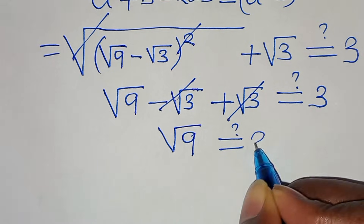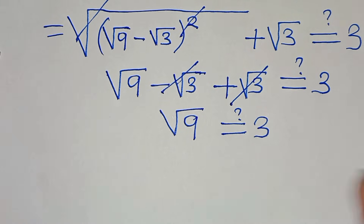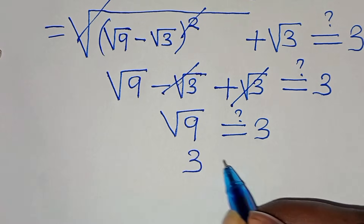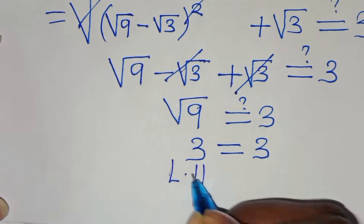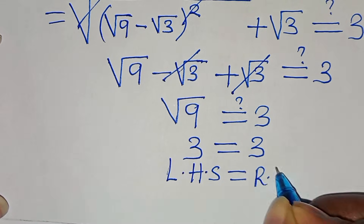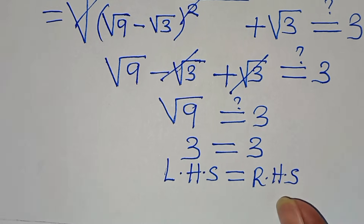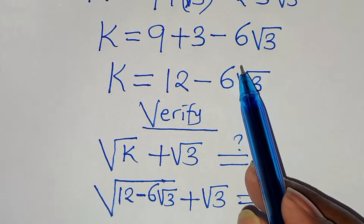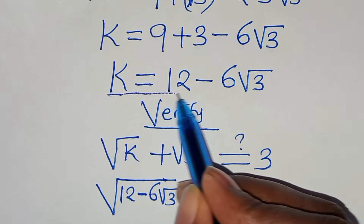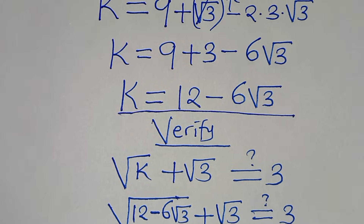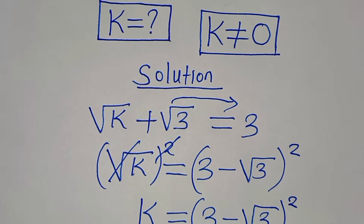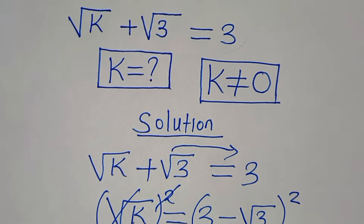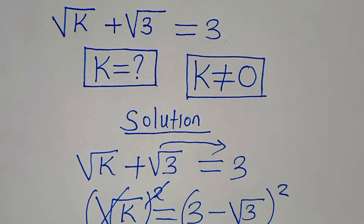Square root of 9 equals 3, so the left hand side equals the right hand side. This confirms that k equals 12 minus 6 square root of 3 satisfies the equation. Kindly follow the steps, like this video and subscribe. If you have alternative methods to solve this, please share in the comment section. See you in the next video — bye bye for now!